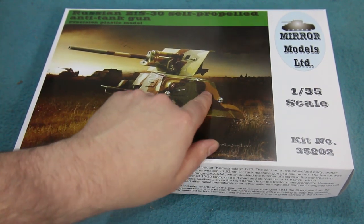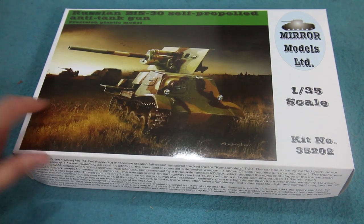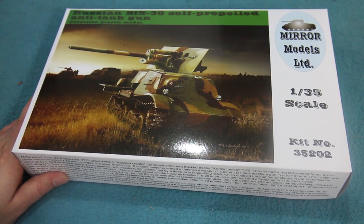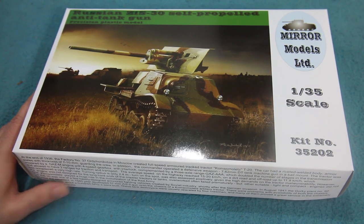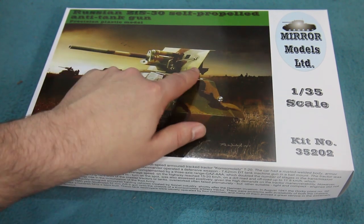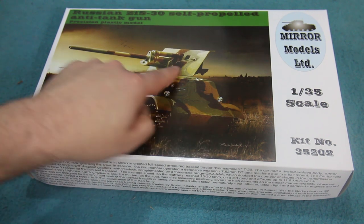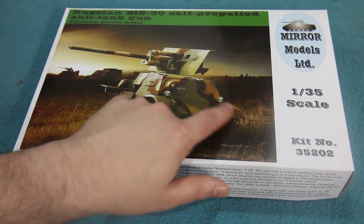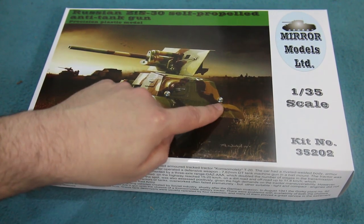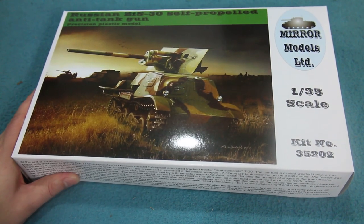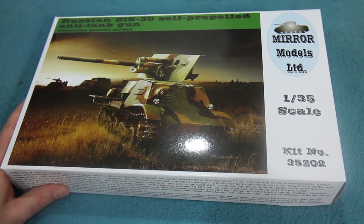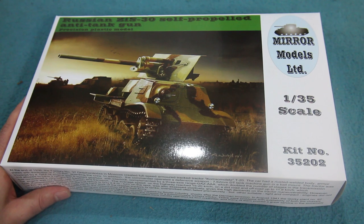This is an improvised anti-tank gun that the Russians or Soviets built during the Second World War. It uses a 57 millimeter ZiS anti-tank gun based on a basic Komsomolets tracked tractor artillery tractor, quite an unusual interesting vehicle.